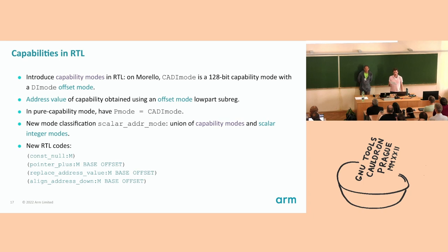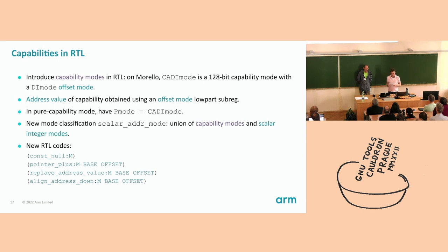We also introduce a new mode classification, scalar_ADDR mode, which is the set union of capability modes and scalar integer modes. We introduce some new RTL codes. CONST_NULL is used to represent the null capability — importantly it has a mode, so we avoid the usual pain of GCC modeless constants. POINTER_PLUS is introduced for capability pointer arithmetic at the RTL level; unlike PLUS RTXs, this RTX requires its operands to have different modes and is therefore also non-commutative. REPLACE_ADDRESS_VALUE is mainly used to implement intcap arithmetic. Finally, we have ALIGN_ADDRESS_DOWN, which does what it says.